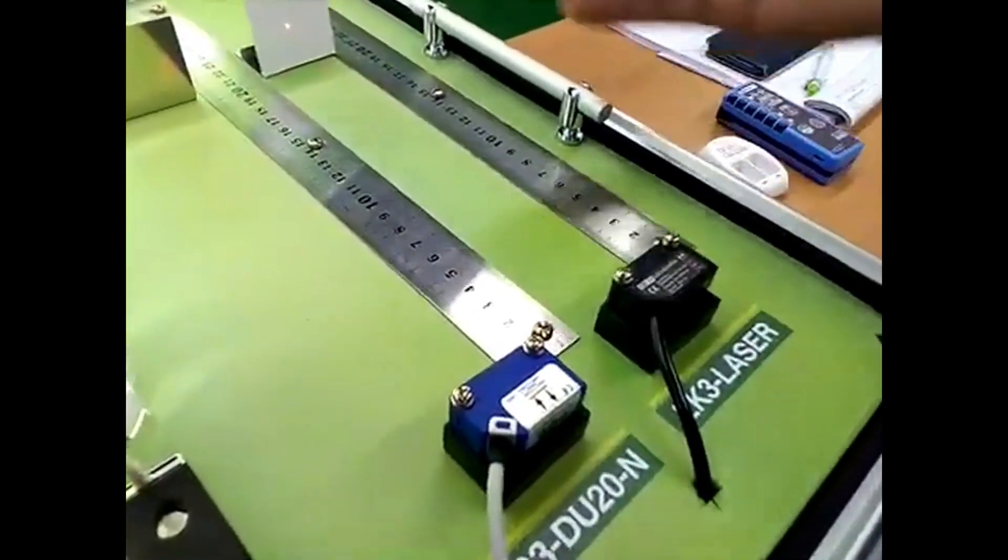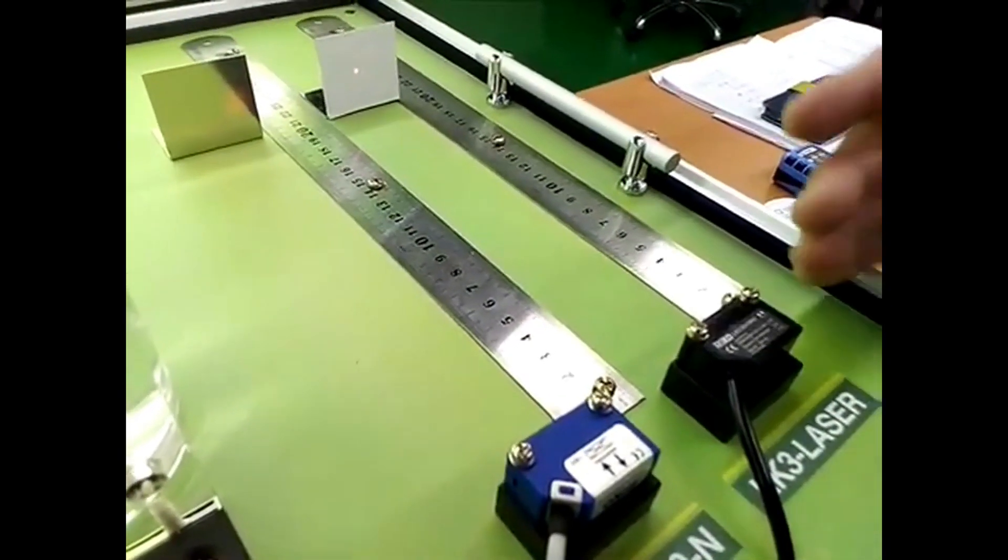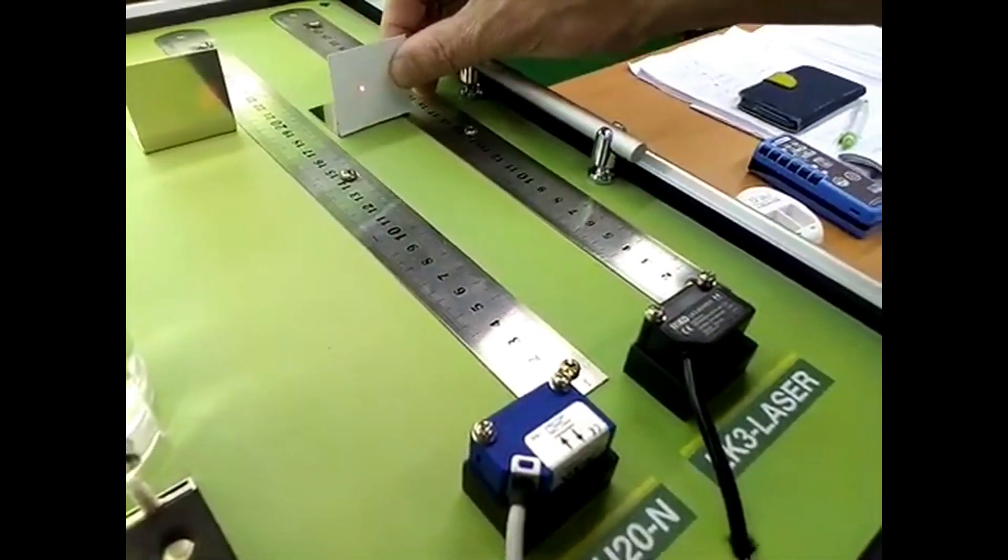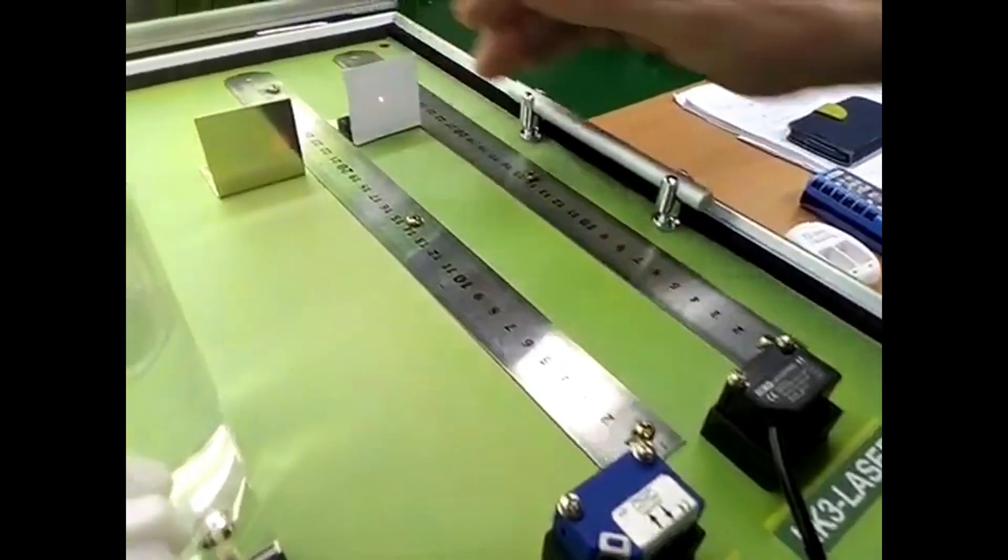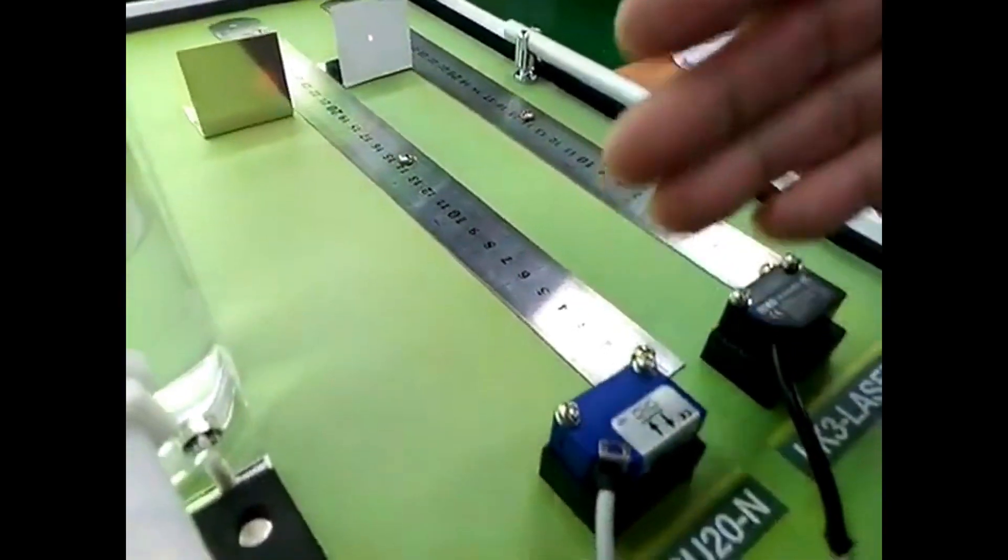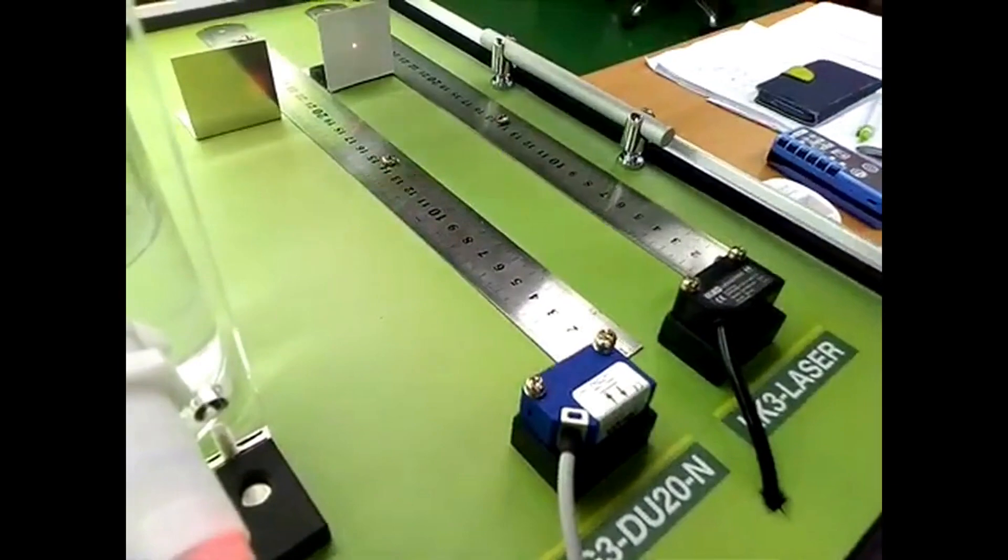And this is small smart Ricoh laser sensor and this is Ricoh BGS photo sensor.